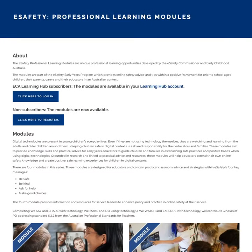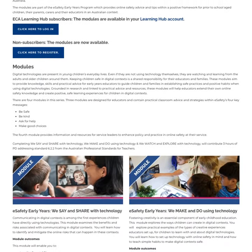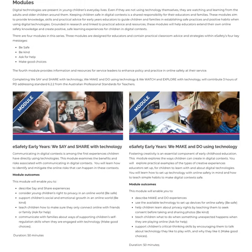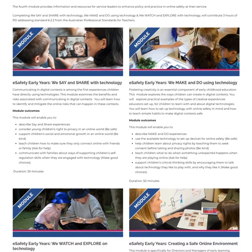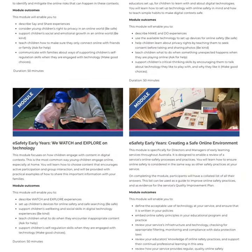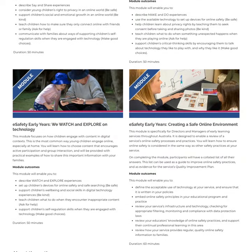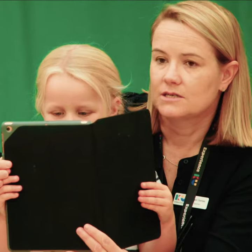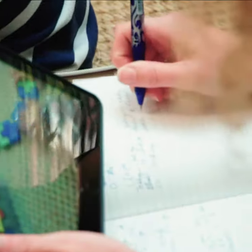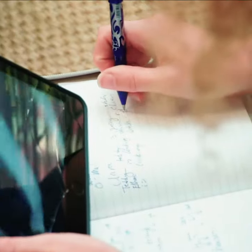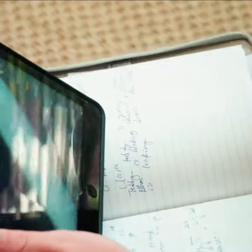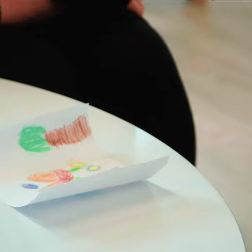The program has three educator modules, each focusing on these capabilities individually, identifying the risks associated with them and explaining how these risks can be mitigated. The program also features a fourth module for directors and managers, focused on policies and processes designed to ensure a safe online environment in early learning services.